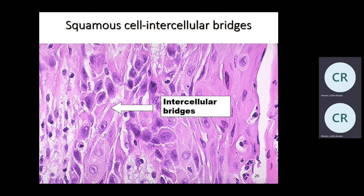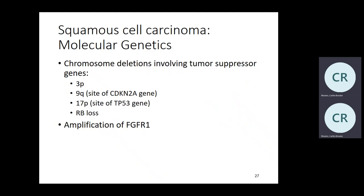If you have a squamous cell carcinoma, you really can't tell whether it's coming from the lung or anywhere else on morphology alone. The only differentiating feature is P16 positivity — P16 is related to HPV and is associated with cervical, vaginal, anal, anorectal, and head and neck tumors. Tonsillar and palate tumors can be P16 positive. If you have metastatic disease to lymph nodes, I sometimes throw a P16 — if positive, it suggests HPV-related head and neck origin.